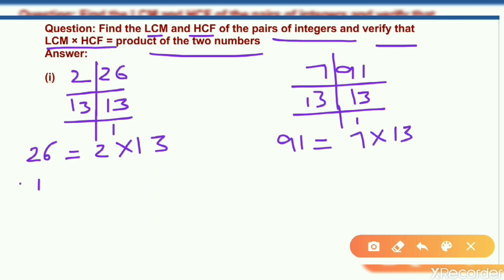Now for finding HCF, what is the full form of HCF? Highest common factor. For finding HCF we have to check out the lower power of common term. So here the common term is 13 and the power is same. So we have 13 only.